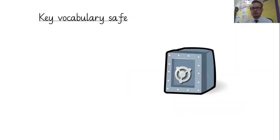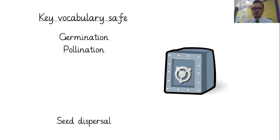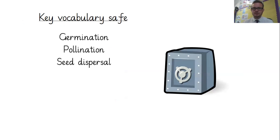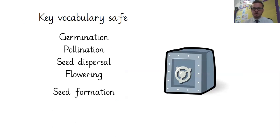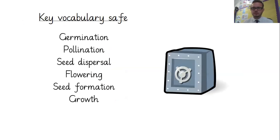So our key vocabulary — and always try to write these down. Once I've gone through them all: germination, pollination, seed dispersal, flowering, seed formation, growth. So write those down. Okay, all written down? Good.